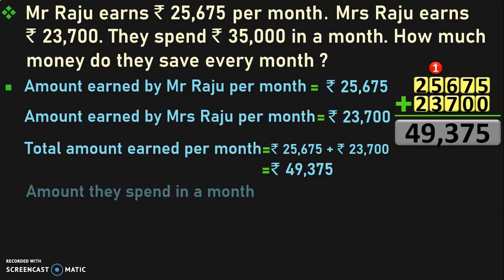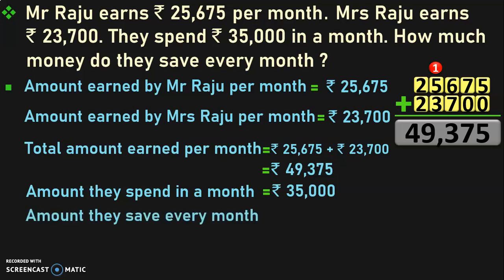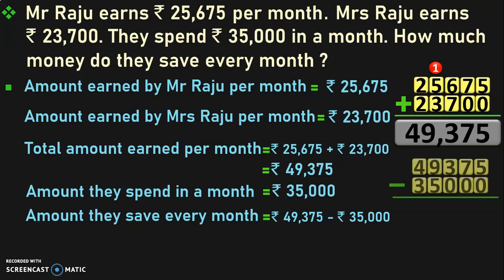The other detail given is that they spend Rs. 35,000 in a month. So, amount they spend in a month is equal to Rs. 35,000. The question is: how much money do they save every month? We know the total amount earned and the amount they spend. Amount they save every month is equal to amount earned per month minus amount they spend in a month. So, 49,375 minus Rs. 35,000.